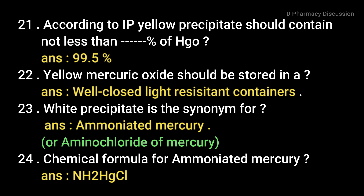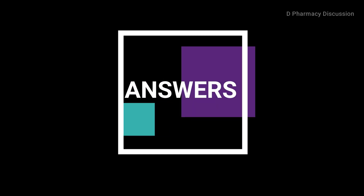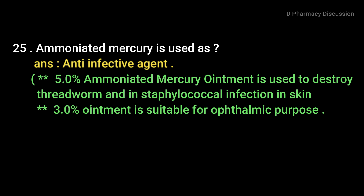White precipitate is the synonym for ammoniated mercury; it is also called amino chloride of mercury. The chemical formula for ammoniated mercury is NH2HgCl. Ammoniated mercury is used as an anti-infective agent: 5% ammoniated mercury ointment is used to destroy threadworm and in staphylococcal skin infections, and 3% ointment is suitable for ophthalmic use.